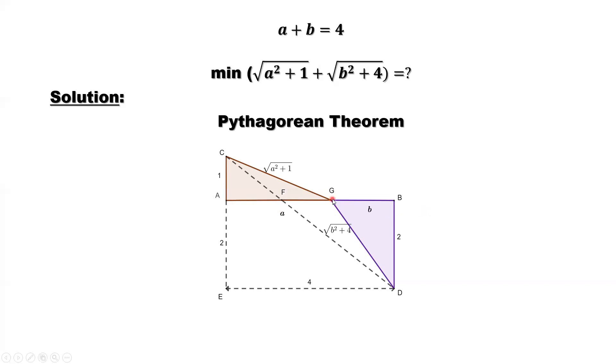We want to find a point, the optimum point, such that the sum of 2 hypotenuses reaches minimum.